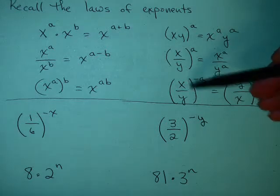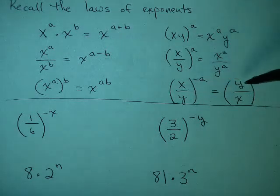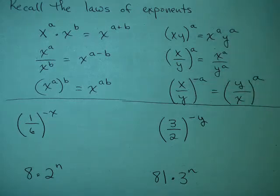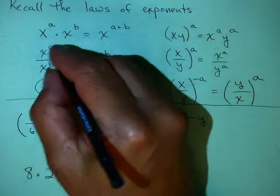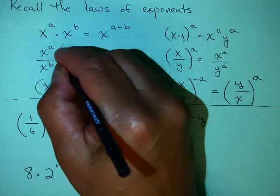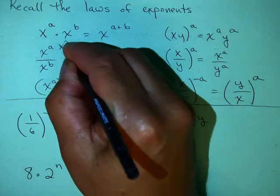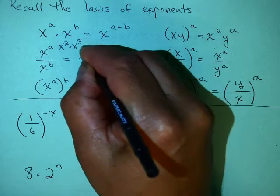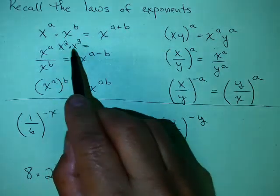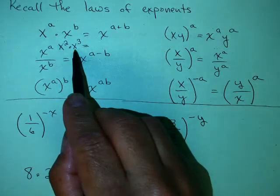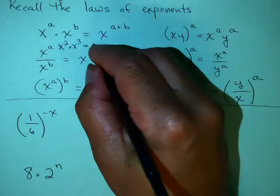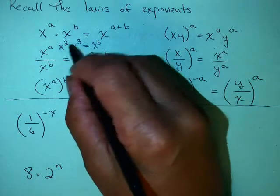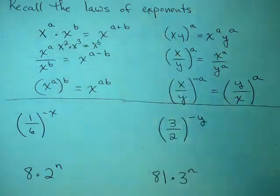And this useful one: x over y to the minus a equals y over x to the a. If you need a reminder, just take an example like the first one. x squared times x cubed — this is x times x, and this is x times x times x, so that gives you a total of 5. And of course, 2 plus 3 equals 5.